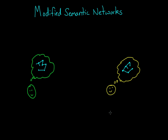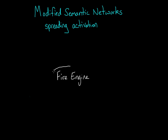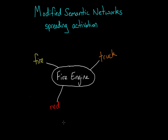One pretty cool thing about semantic networks is that all the ideas in your head are connected together. So when you activate one concept, you're pulling up related concepts along with it. This general elevation and availability is called spreading activation. For example, if I say 'fire engine,' not only do you think of a fire engine, but related concepts such as trucks, fire, even the color red become activated, making it easier for you to retrieve or identify those items.